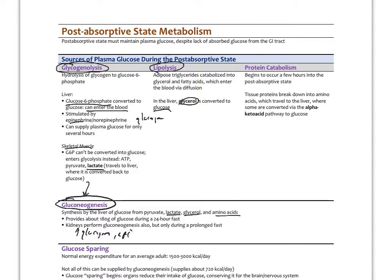The fatty acids from lipolysis are used via beta-oxidation for energy. A third source of plasma glucose is protein catabolism, which is the minor source and occurs a few hours into the post-absorptive state. Tissue proteins break down into amino acids, which travel to the liver; the liver converts them into alpha-keto acids via transamination, and those are converted back to glucose. This breakdown of muscle protein to maintain blood sugar happens more with prolonged fasting.